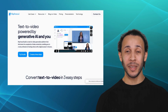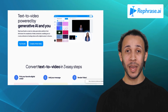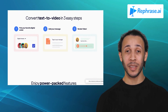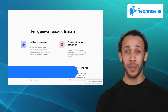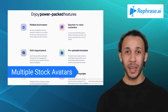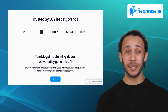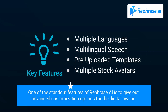Last but not least, we have Rephrase AI. Rephrase AI is an innovative text-to-video platform that harnesses the power of generative AI to simplify video production. It offers features like multiple languages, multilingual speech, pre-uploaded templates, and multiple stock avatars. With Rephrase AI, you can quickly generate blog posts, articles, product descriptions, and much more. One of the standout features of Rephrase AI is its advanced customization options for the digital avatar.